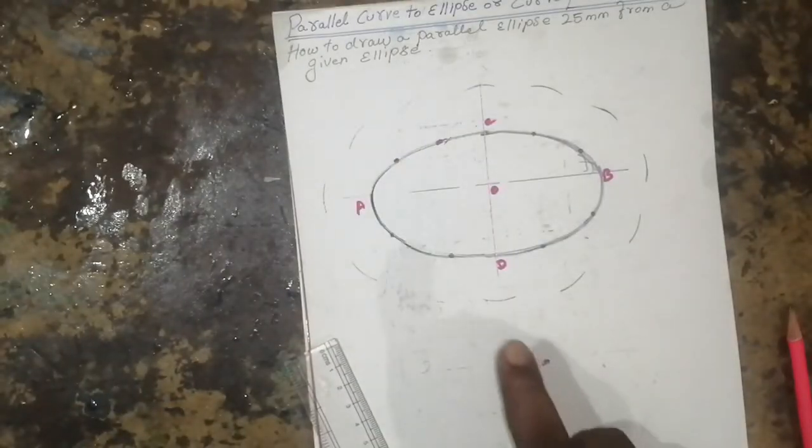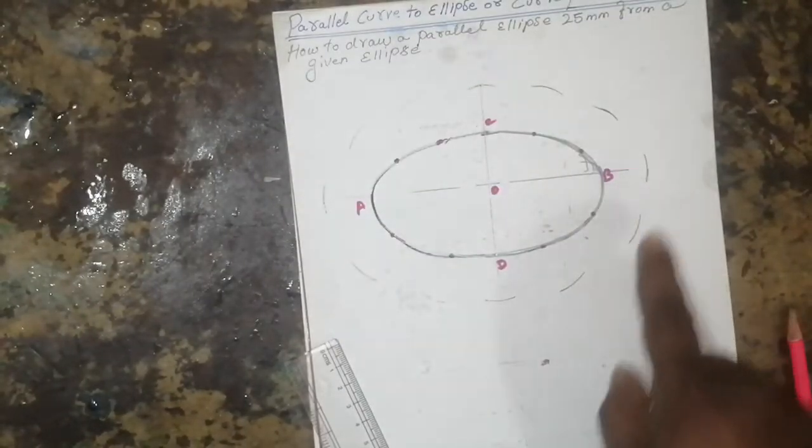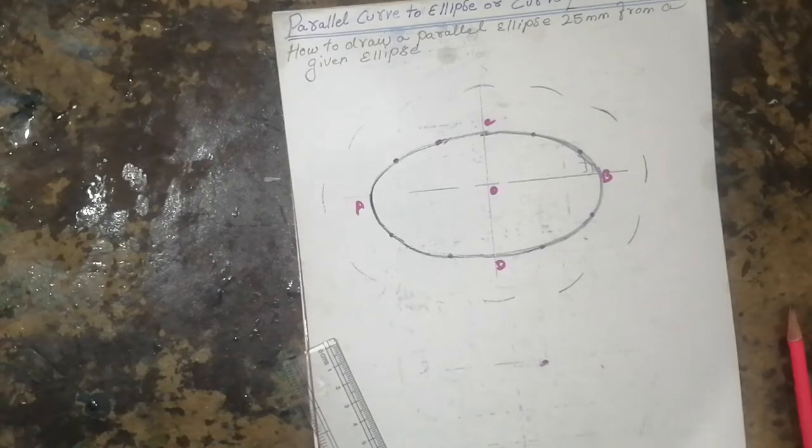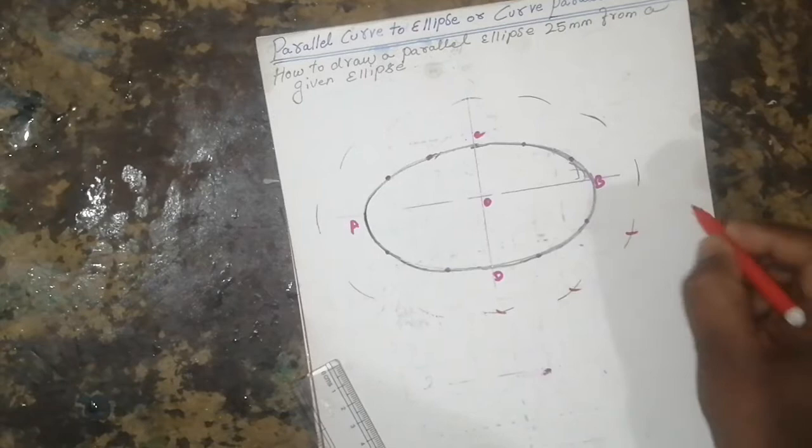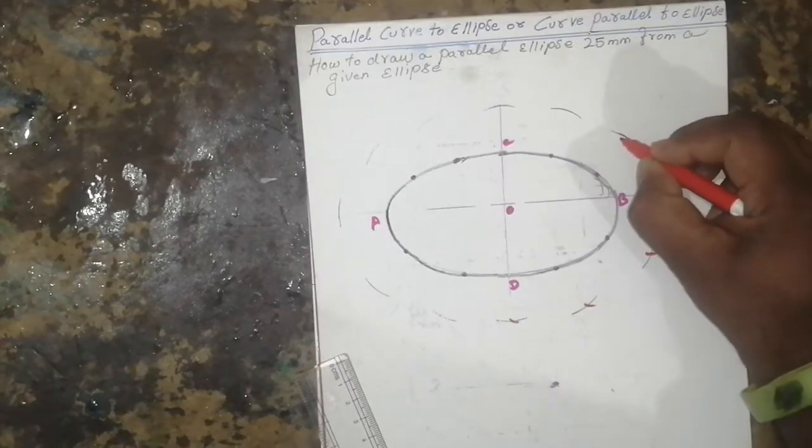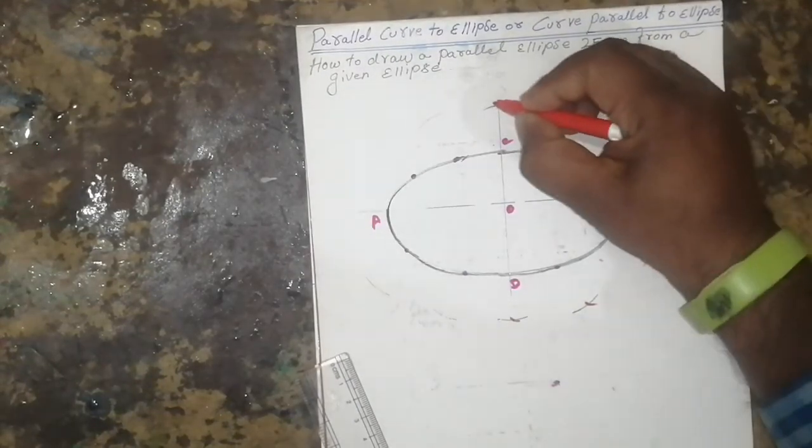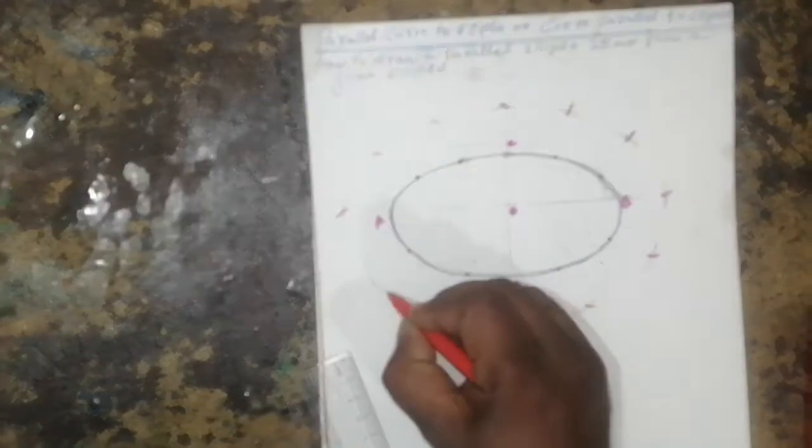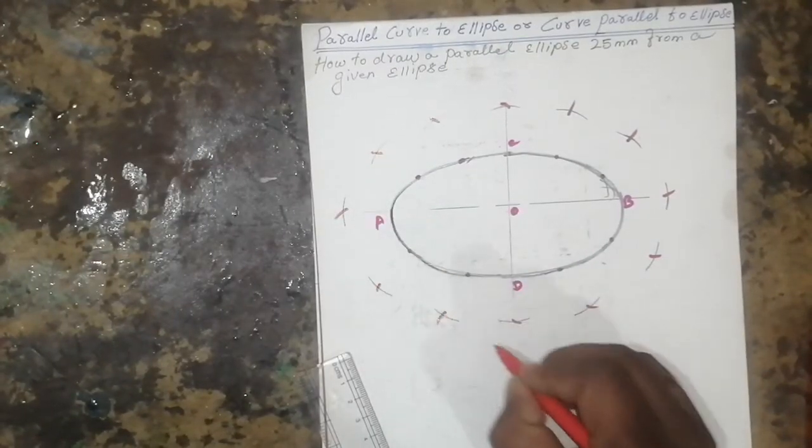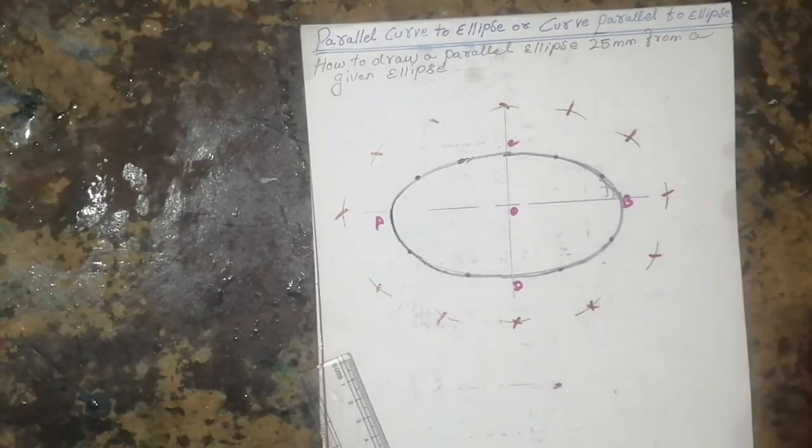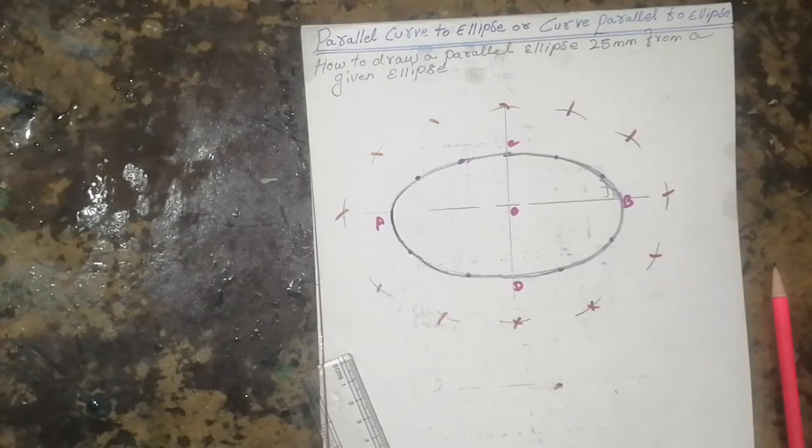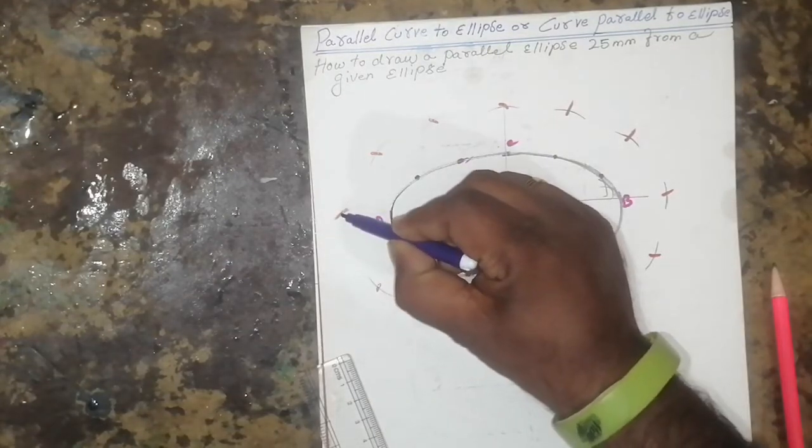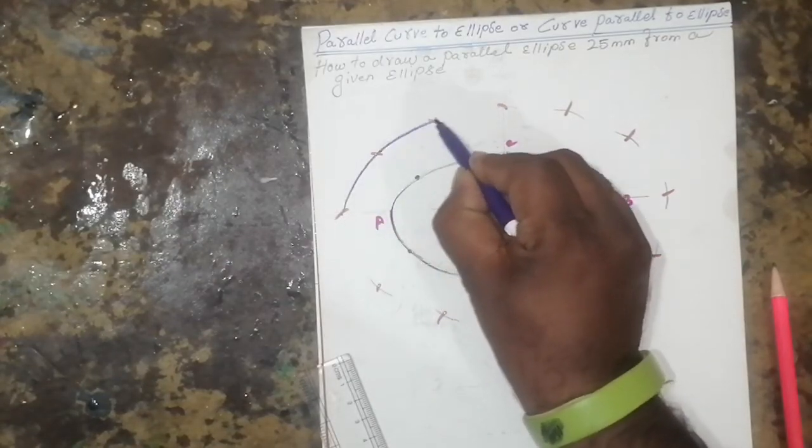So the arc will cut like this. Then I'll show the point, then you can join the ellipse. So that you can join the ellipse, come around like this.